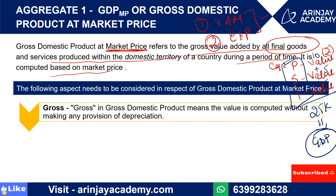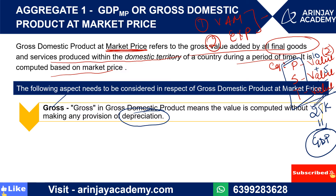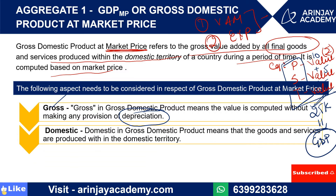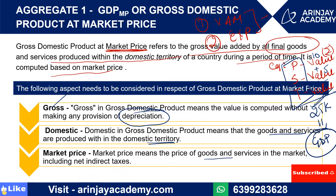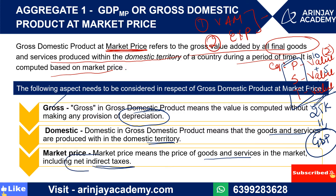Now let's see the key aspects. First, 'gross' means depreciation has not been deducted — depreciation is still included in the value. Second, 'domestic' means the goods and services are produced within the domestic territory only. Third, 'market price' means net indirect taxes — that is, indirect taxes minus subsidies — are still included and have not been deducted yet.